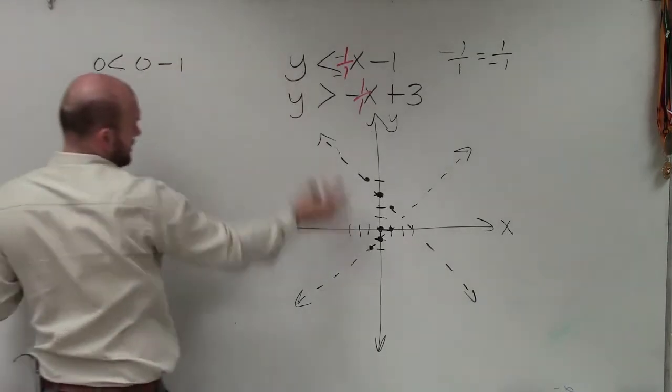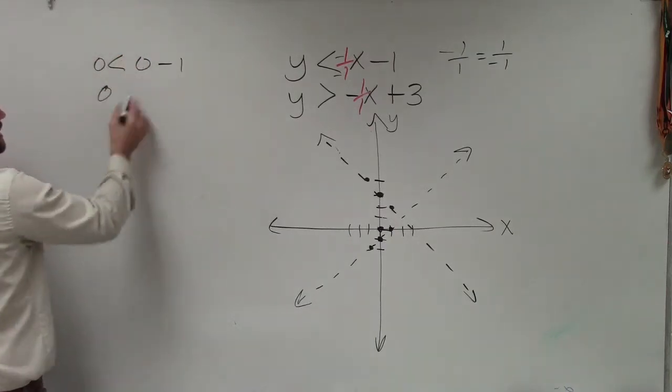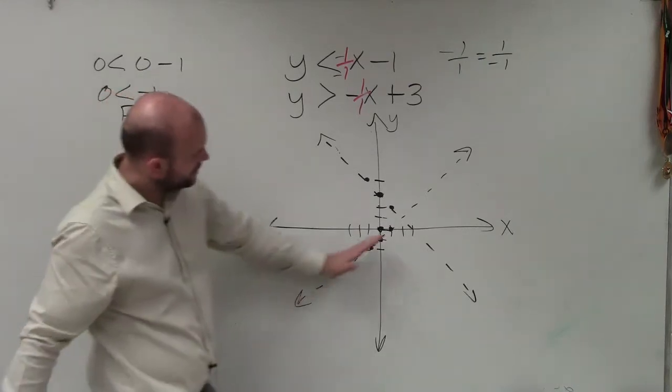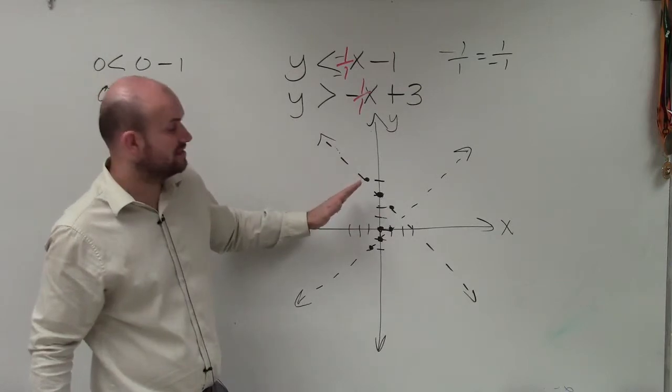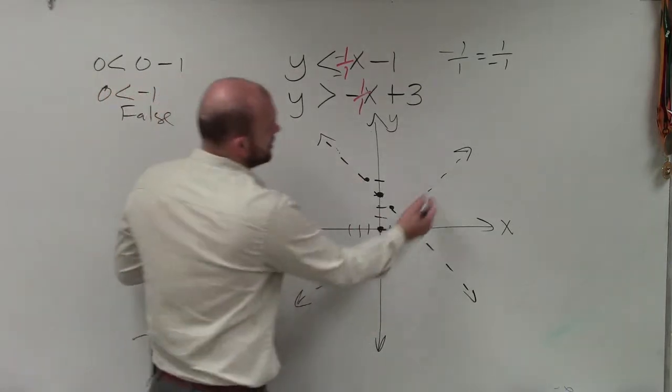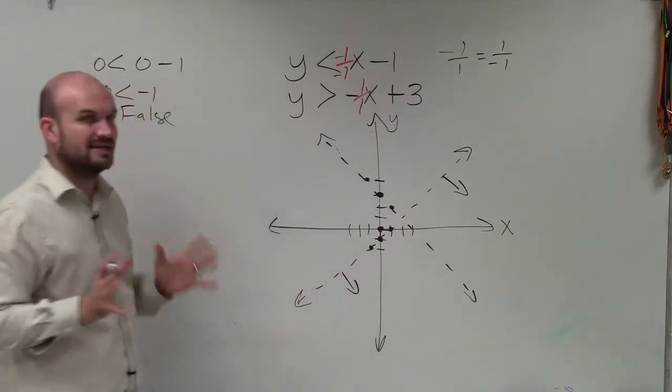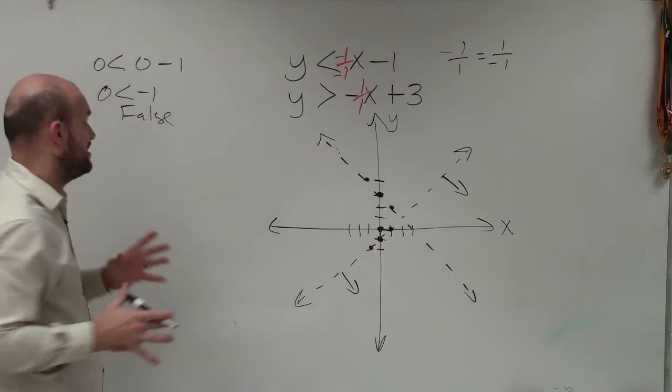So my first inequality that I graphed right here, I plugged in 0 in for y and 0 in for x. And I get 0 is less than negative 1. Now that is false. So for this inequality, since my test point is false, that means all the points above the boundary line are false. And that means all the points below are true. And I'm just going to draw arrows here before until I get to actually graphing, or until I test both of my boundary lines.